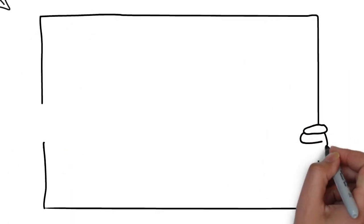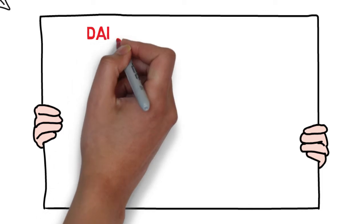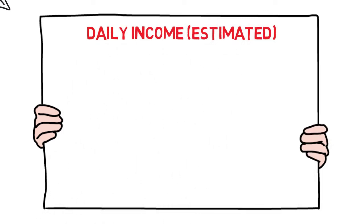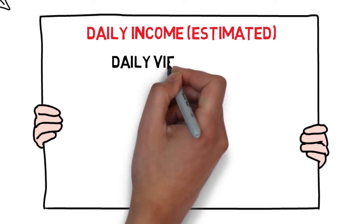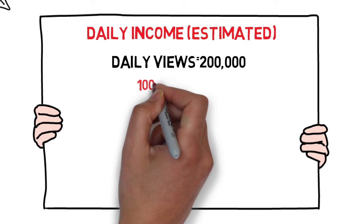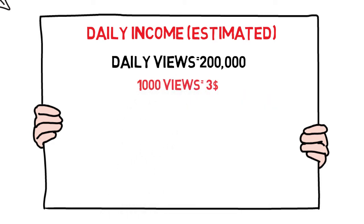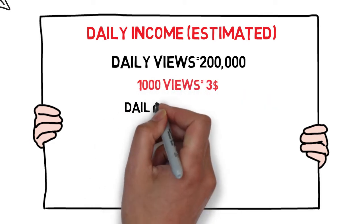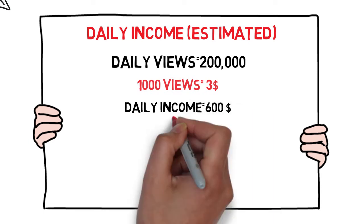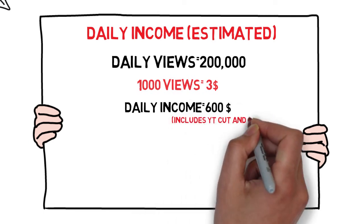Let's talk about the daily income of Logan Paul vlogs. Remember, it's just an estimate - only Paul knows how much he originally earns. So if he gets 200,000 views every day from YouTube, taking an average of $3 for every thousand views, his daily income comes to be around $600. But this includes the YouTube cut and the taxes.